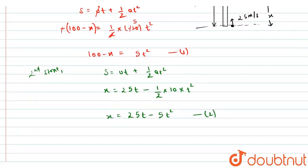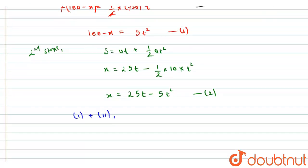So now to solve further let me add equation one plus equation two. So we will get here 100 minus x plus x on the lhs and on the rhs we will get 5 t square plus 25 t minus 5 t square.